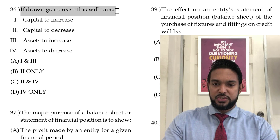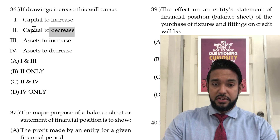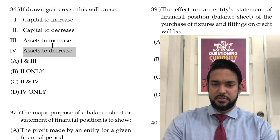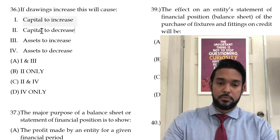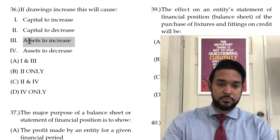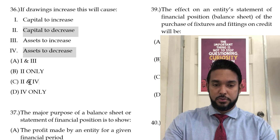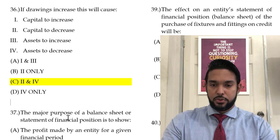Continuing on drawings: if drawings increases, what does it cause? Capital to increase? No. Capital to decrease? Yes. Assets to increase? No. Assets to decrease? Yes. So we're looking for options 2 and 4 — the answer is 214.